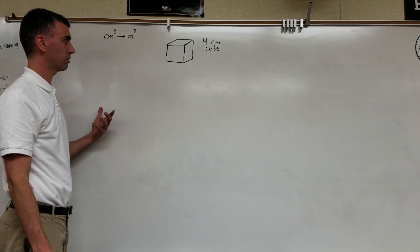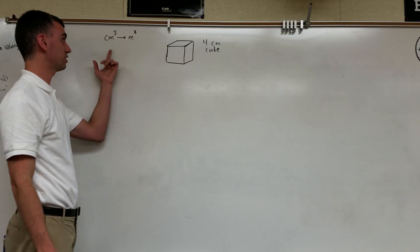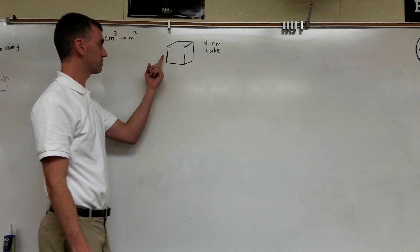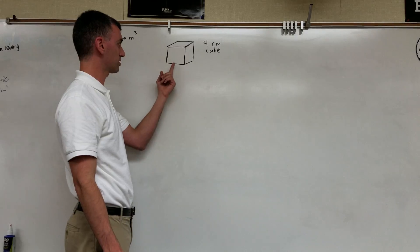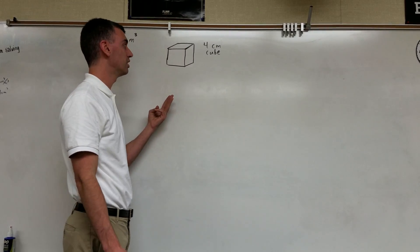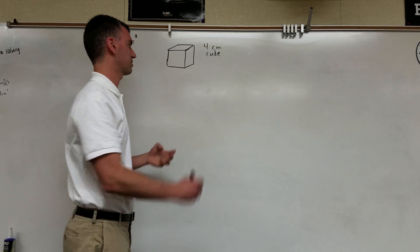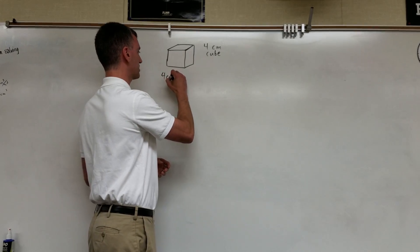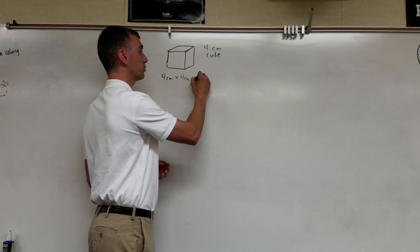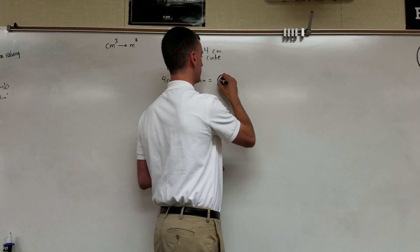The first thing you've got to do is find the volume of the cube in cubic centimeters, which is what you've been given. Being that it's four times four times four — width times length times height — four centimeters times four centimeters times four centimeters gives you a volume of 64 cubic centimeters.